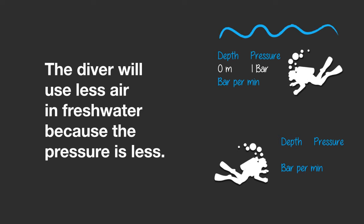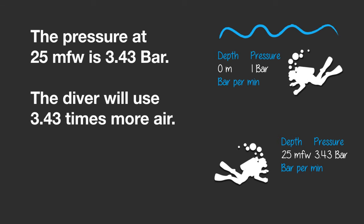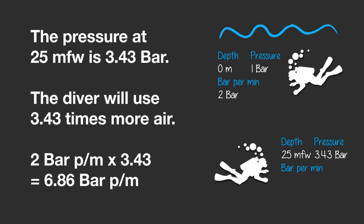If the diver is diving in fresh water, he will use slightly less air than in seawater because the pressure is slightly less. The pressure at 25 metres of fresh water is 3.43 bar — 25 metres divided by 10.3 plus 1. So the diver will use 3.43 times more air, rather than the 3.5 times more air he would use in seawater. 2 bar multiplied by 3.43 is 6.86 bar, so he will use 6.86 bar per minute at 25 metres of fresh water. In seawater he would use 7 bar per minute, so not that much difference really.